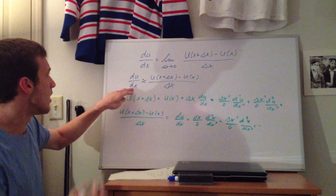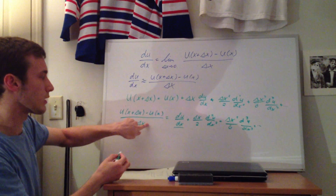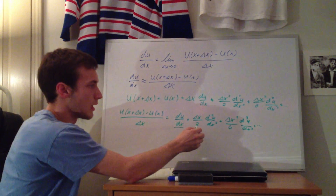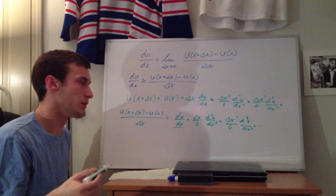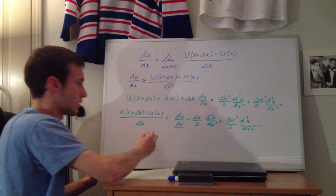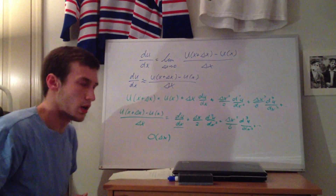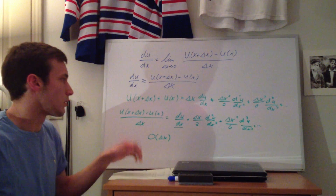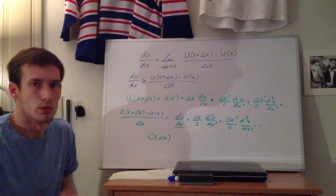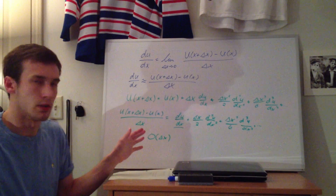We can see that the derivative du dx equals this finite difference approximation plus error terms. The order of accuracy of this approximation is determined by the lowest power of delta x in the error terms, which gives us order O of delta x — first order accuracy. There are methods to get higher order approximations as well, which I'll cover in future CFD videos. This is an important application of the power series and Taylor series introduced earlier.